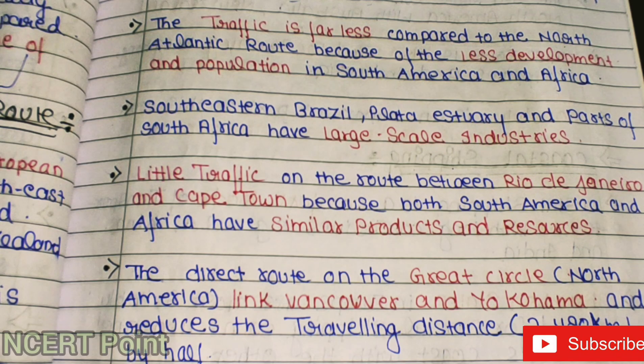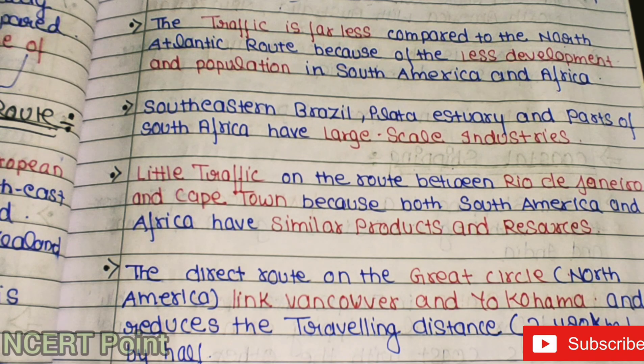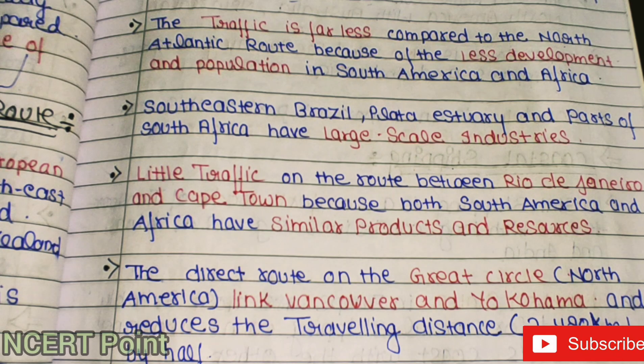The direct route on the Great Circle links North America — Vancouver and Yokohama — and reduces the traveling distance by 2,480 km.